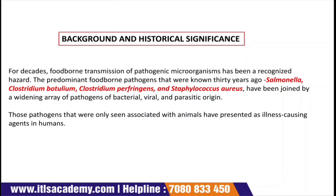The burden is upon us to make the most of political opportunities and take food safety to the next level. From decades ago, the foodborne transmission of pathogenic microorganisms has been recognized as a hazard. Predominant foodborne pathogens known 30 years ago include Salmonella, Clostridium botulinum, Clostridium perfringens, and Staphylococcus aureus, and these have been joined by a widening range of pathogens of bacterial, viral, and parasitic origin.